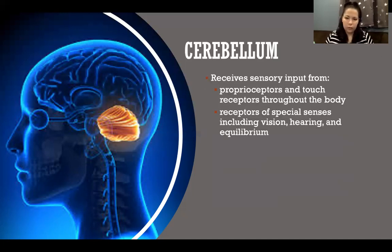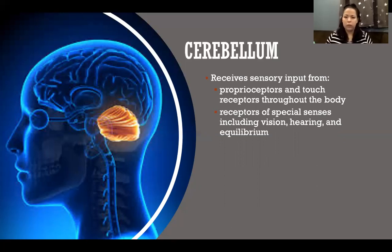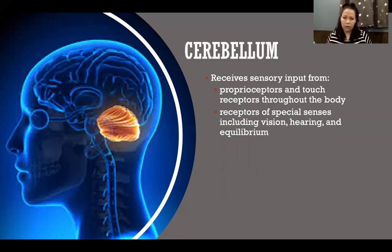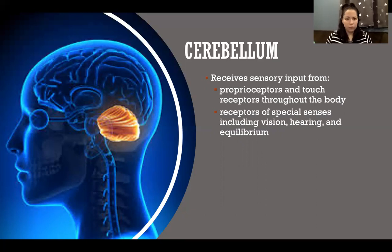The cerebellum receives sensory input from many different places, including proprioceptors and touch receptors throughout the body — Golgi tendon organs, muscle spindle cells, joint kinesthetic receptors, and touch receptors in the skin and deeper tissues. It also gets input from receptors of our special senses, including vision, hearing, and equilibrium. So the cerebellum takes in all this information about where we are in space and how we're moving, and also from our special senses — for example, we might see ice on the ground before we've stepped on it, giving the cerebellum important visual information to anticipate what changes will need to be made.